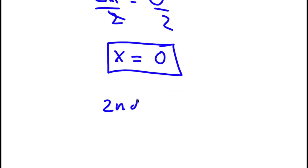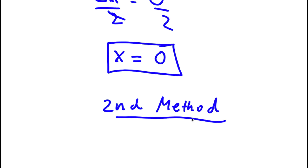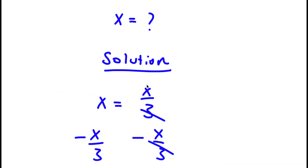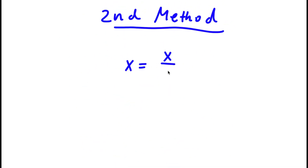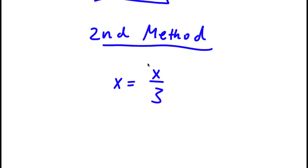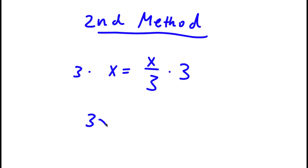Now for the second method of solving this problem. My original problem was x equals x over 3. This time, instead of subtracting x over 3 on both sides, I'm simply going to multiply both sides by 3. So now I have 3 times x is equal to x over 3 times 3. 3 times x is simply 3x, and x over 3 times 3 — these two 3s cancel out, so I'll simply be left with x.